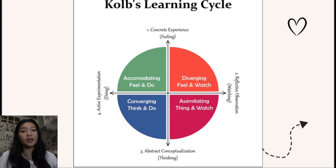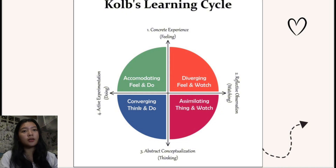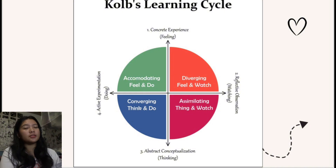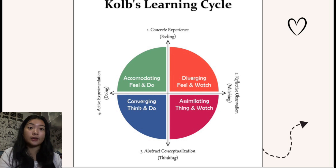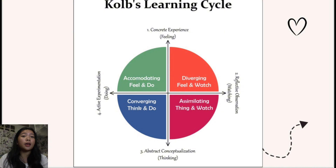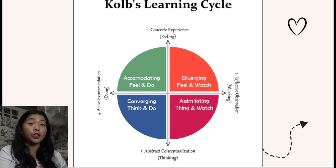Next is abstract conceptualization, where reflection gives rise to a new idea or modification of an existing abstract concept — what the person has learned from their experience. In this stage, learning involves logic, theories, and ideas rather than feelings to understand the situation or task. The last stage is active experimentation, where newly created or modified concepts give rise to experimentation. The learner applies their ideas to the world around them to see what happens, taking an active form of experimenting in different situations.